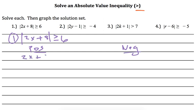So 2x plus 8 is greater than or equal to 6. Subtract 8 from both sides. That means 2x has to be greater than or equal to negative 2. Divide by 2, and x is greater than or equal to negative 1.